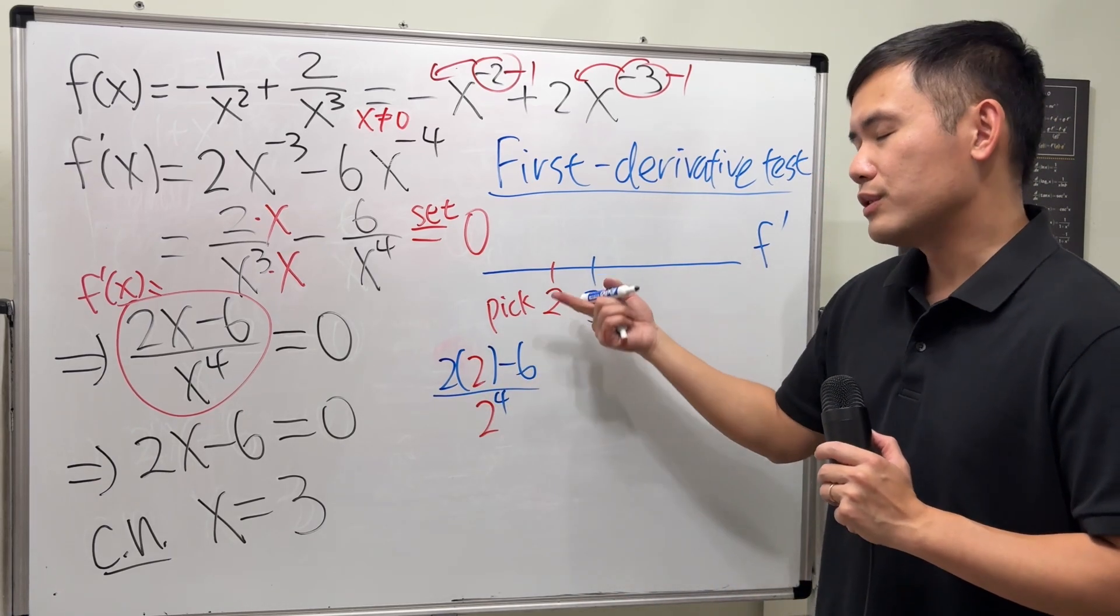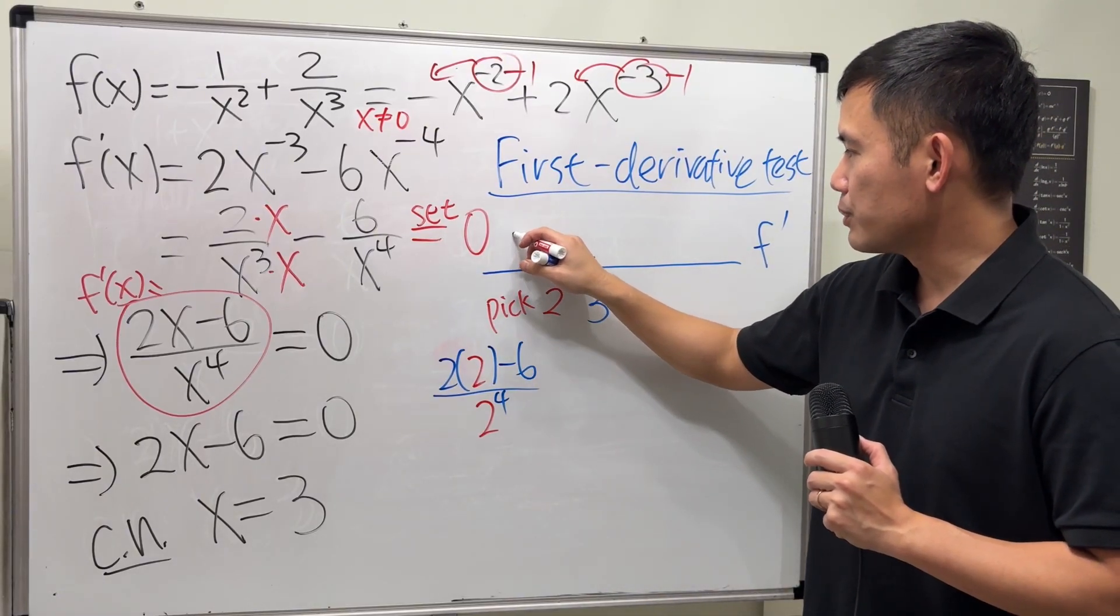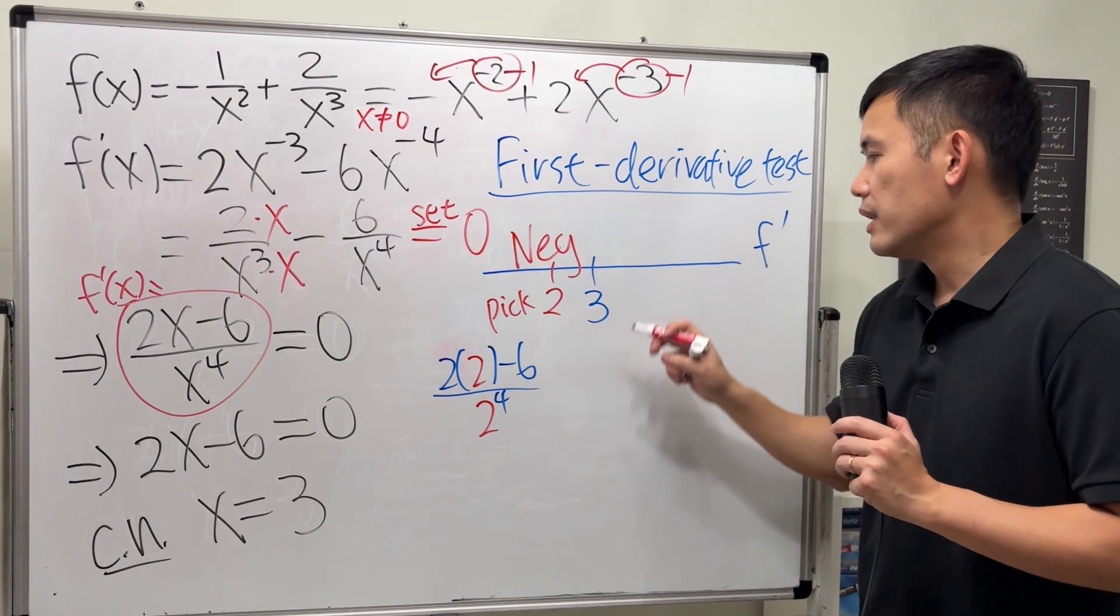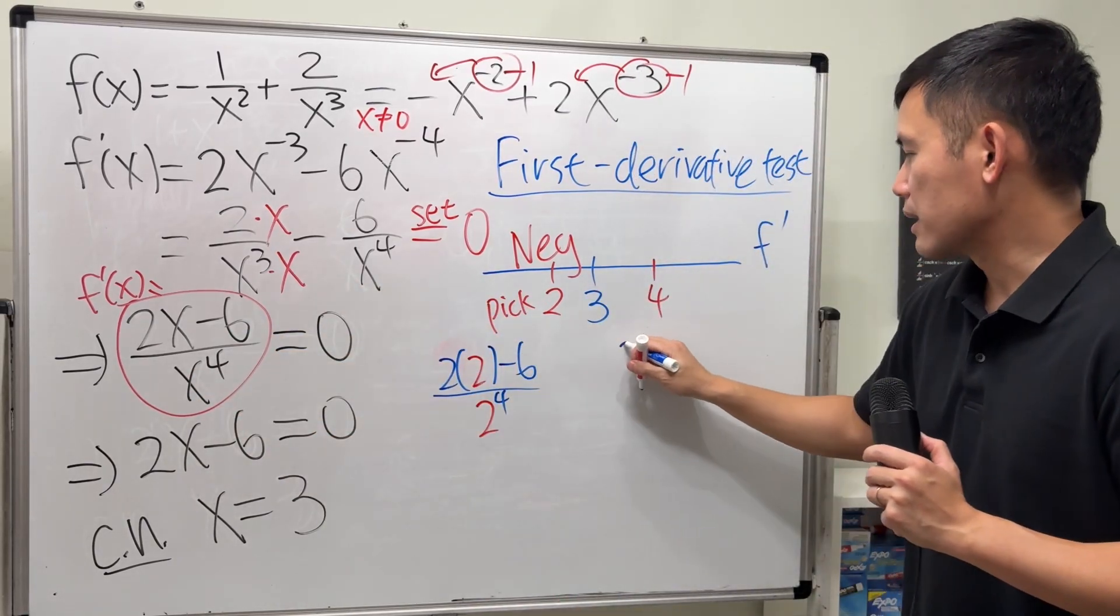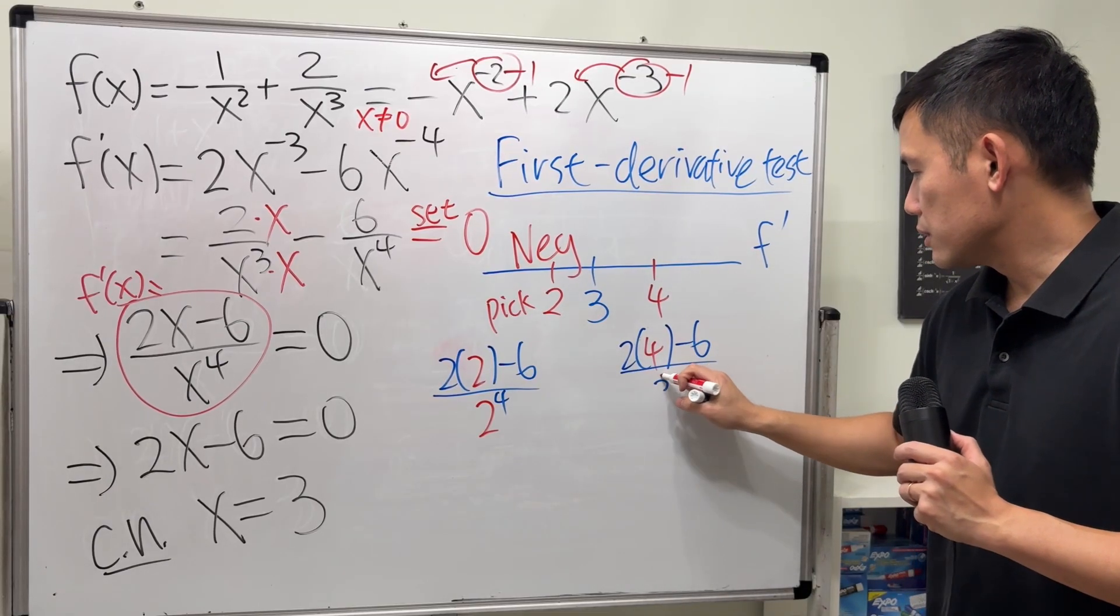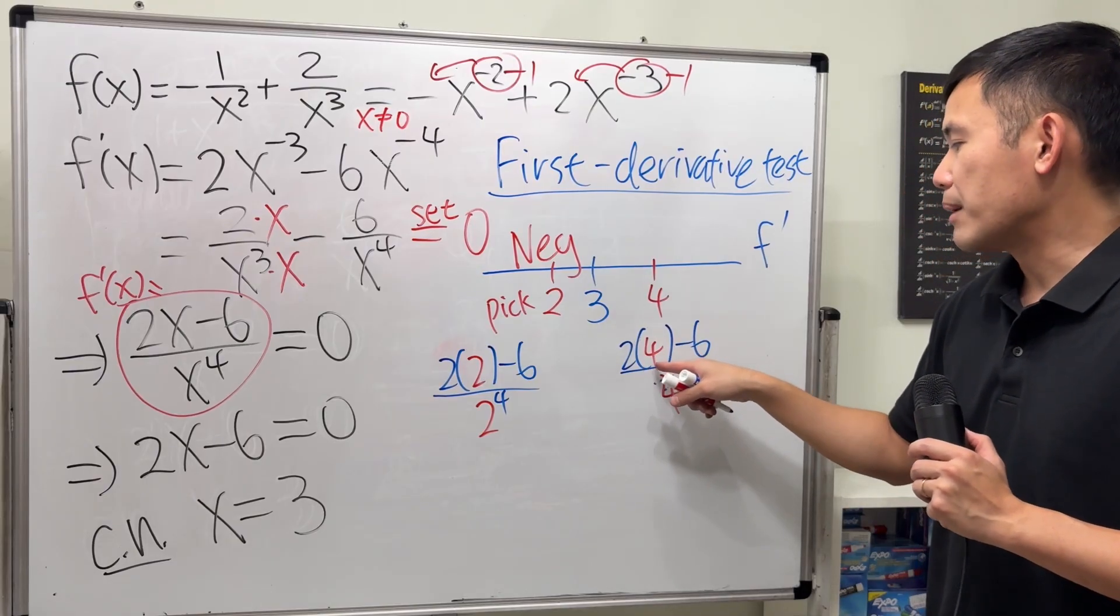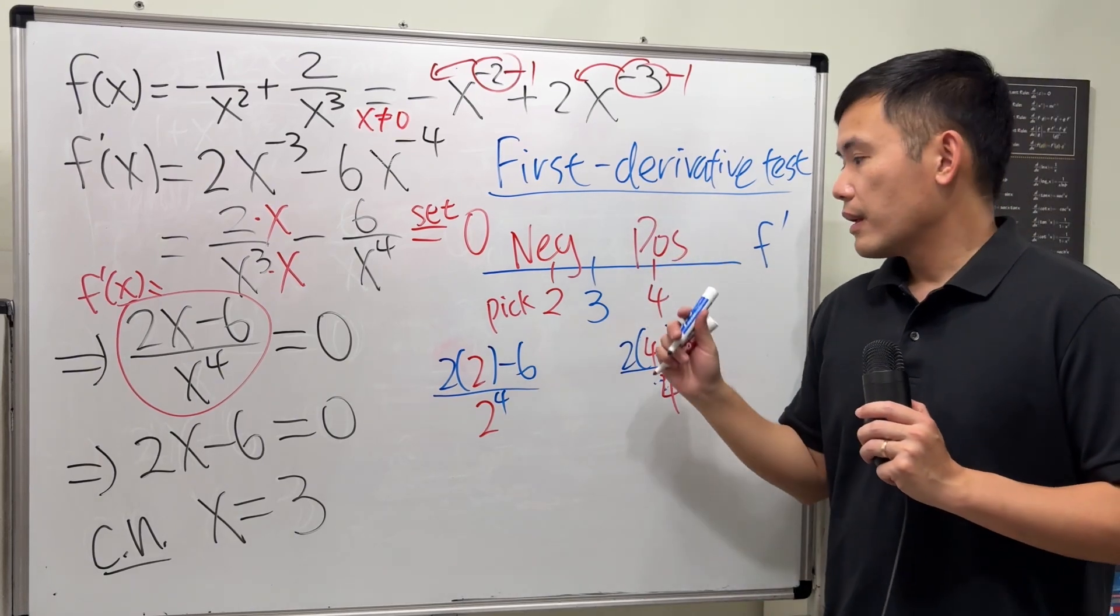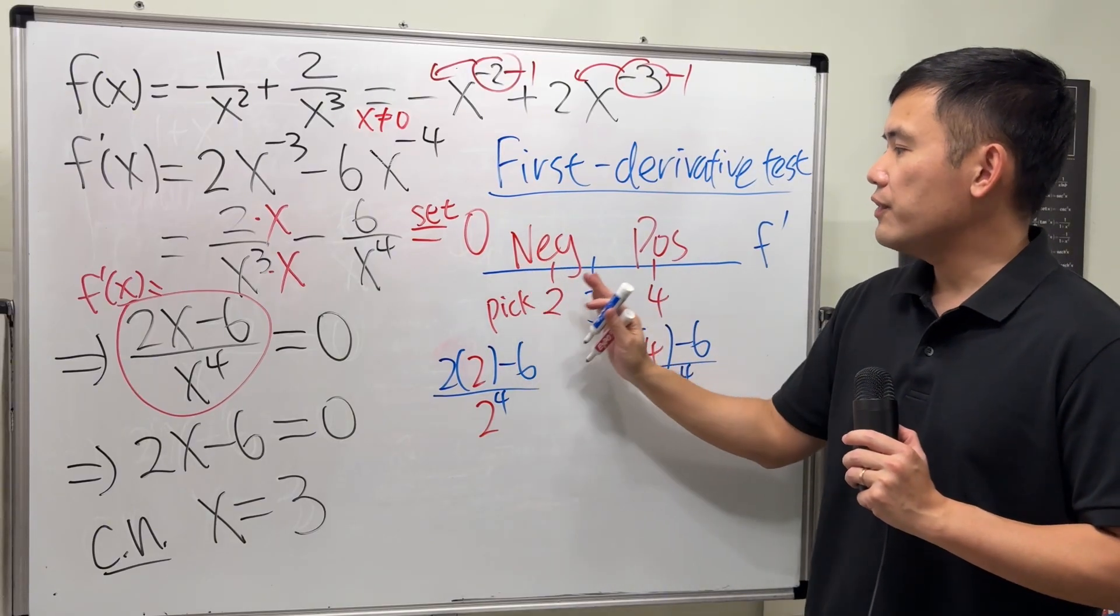All we care now right here is just this right here is negative. So I'll just put on neg for negative. And make sure you also check a number bigger than 3. Let's say I want to check 4. Do the same thing plug into here. You will see it's positive. But I'll still show you all the steps. This is 4 to the fourth power. And just the top, right? 8 minus 6 is positive 2. So POS. So when x is 3, the first derivative is 0. But before that is negative. After that is positive.